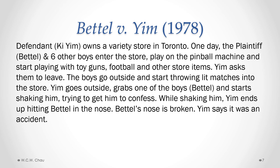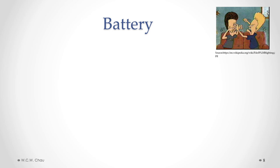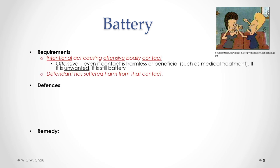Let's look at this case in terms of the tort of battery. For each tort we cover in this module, we will summarize it in three parts: the requirements for that tort, the available defenses, and the appropriate remedy if the tort has been committed. For the tort of battery, the requirements are that there must be an intentional act causing offensive bodily contact, and the plaintiff has suffered some kind of harm from that contact.